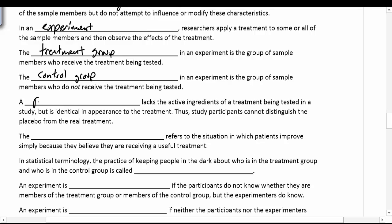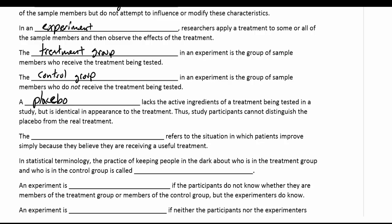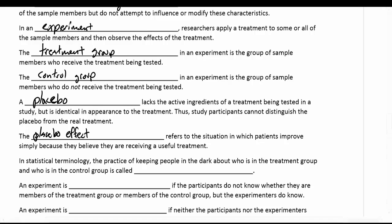Sometimes the control group will get something called a placebo. A placebo lacks the active ingredients of the treatment being tested but is identical in appearance to the treatment, so participants cannot distinguish between the placebo and the real treatment. For example, giving a child a piece of candy instead of aspirin so they think they're getting medicine. You can then use the placebo to measure improvement, which brings up the placebo effect — when the data suggests the group is actually getting benefits from the placebo, meaning the power of their will is having an impact on the results rather than the actual treatment.